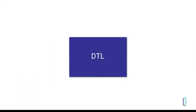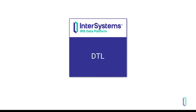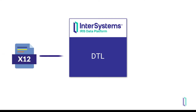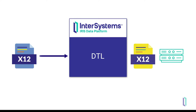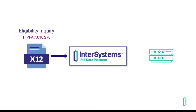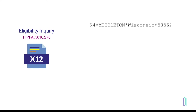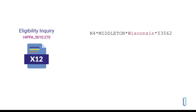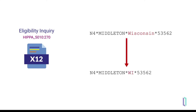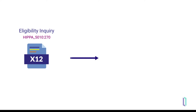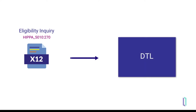This video shows how to use the DTL editor in InterSystems IRIS Data Platform to transform an X12 message to meet the requirements of your target system. Consider a case where you are routing eligibility inquiries from provider systems to multiple health insurance organizations, also known as payers. Incoming EDI 270 messages have N4 segments with the state name written out, which is incompatible with the receiving organization's systems that use state abbreviations. You need to transform this data field by applying a lookup table to convert between full state names and their abbreviations.